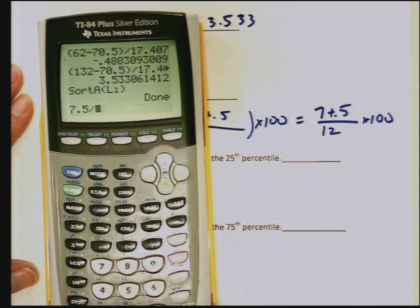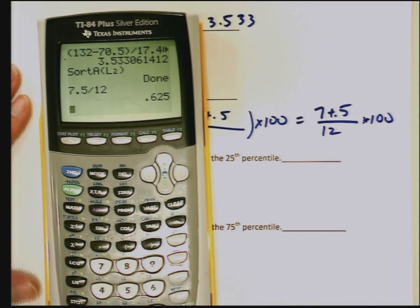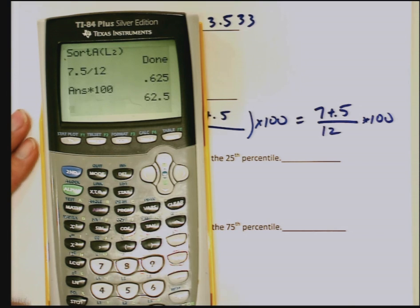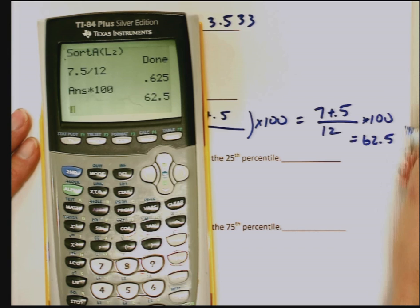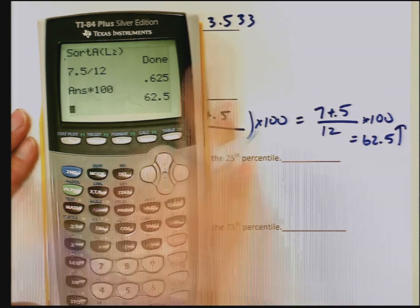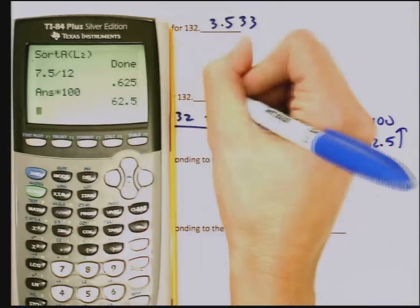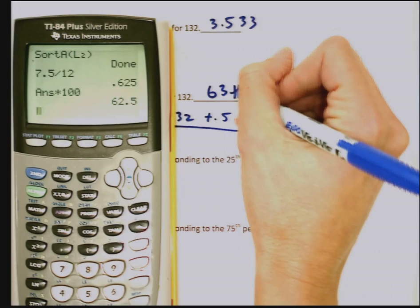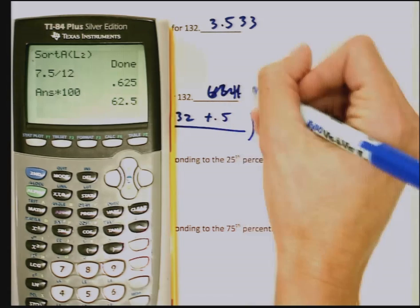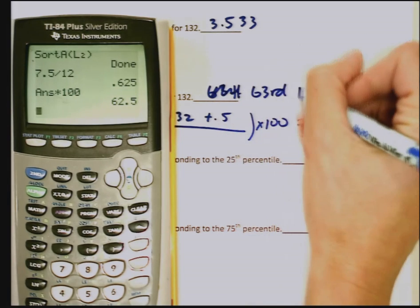We always want a whole number for these. I get 62.5. Always round up. Even if that was 62.1, I would still round it up to 63. So we say we're in the 63rd percentile.